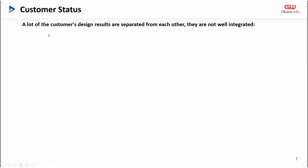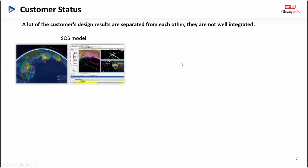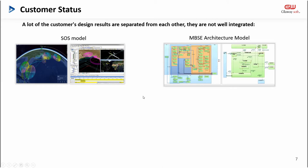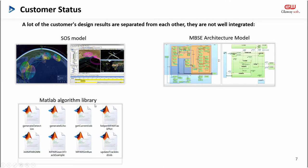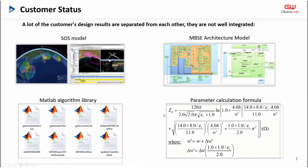Generally speaking, customers will create many design models, such as the SOS model based on the STK platform, the architecture model based on the Capella platform, the algorithm model based on the MATLAB platform, and the parameter calculation formulas that exist in Excel. They are poorly coupled, so customers need to use these models separately in each platform. Data transfer and simulation analysis among multiple models are difficult.